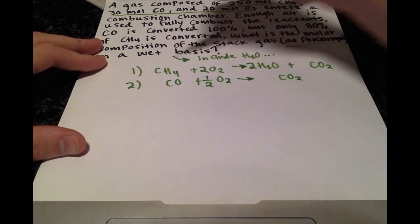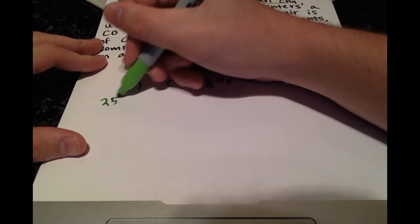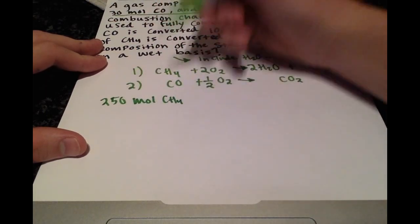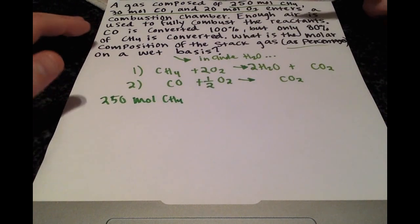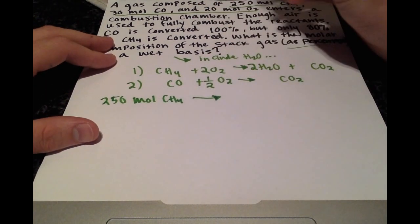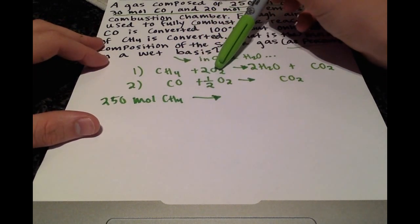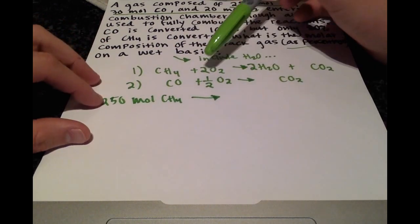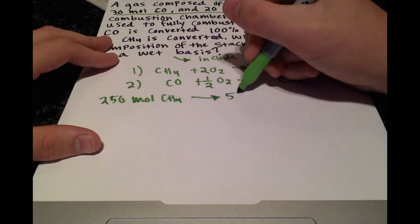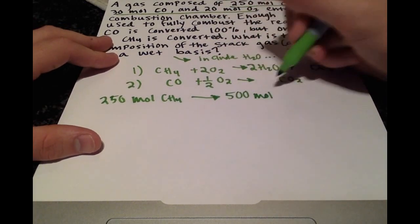We were told that we had 250 moles of methane. How many moles of oxygen do we need to combust this? From our balanced equation we can see that we need twice as many moles of oxygen, so that's going to be 500 moles of O2.